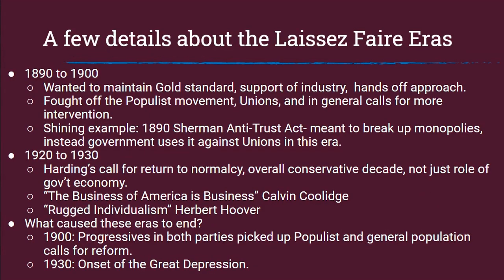Let's take a look at a few details about the laissez-faire eras — this is in no way comprehensive. In the 1890 to 1900 time period, conservative governments wanted to maintain the gold standard, support industry, and keep a hands-off approach to the economy. They fought off the populist movement, unions, and calls for more intervention. The shining example is the 1890 Sherman Anti-Trust Act, which was meant to break up monopolies, but instead the government used it against unions in this era.